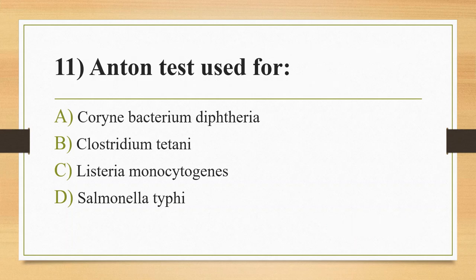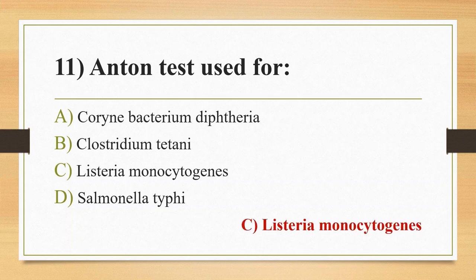Eleventh question: Anton test is used for? Option A, Corynebacterium diphtheria; Option B, Clostridium tetani; Option C, Listeria monocytogenes; Option D, Salmonella typhi. The answer is Option C, Listeria monocytogenes. Anton test is the inoculation of culture into the conjunctival sac of a rabbit or guinea pig, which causes severe keratoconjunctivitis within 24 hours.